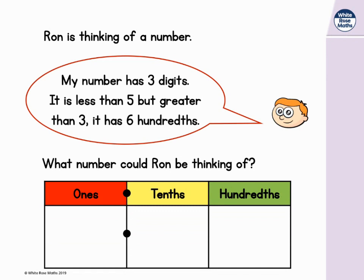If it is a three-digit number but less than five, we know it must have hundredths. And Ron said it has six hundredths. It could have three ones and no tenths. Three point zero six is greater than three but less than five.